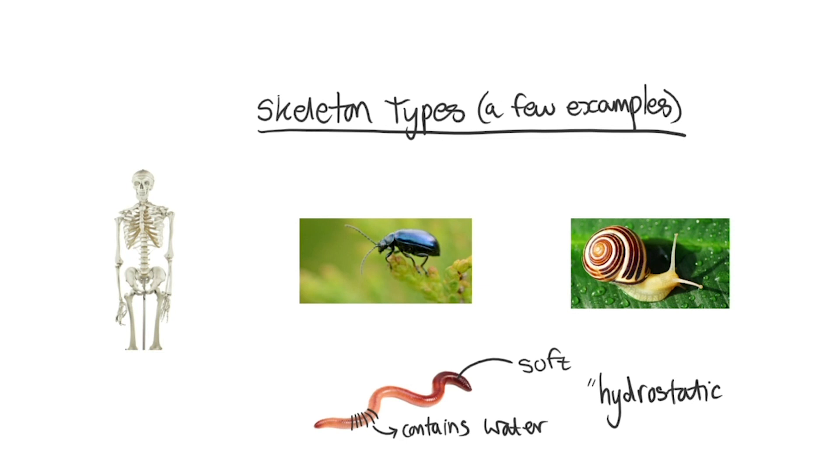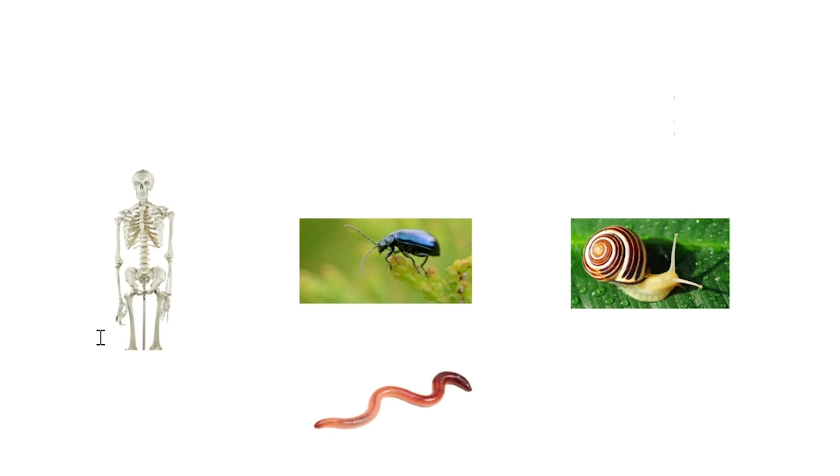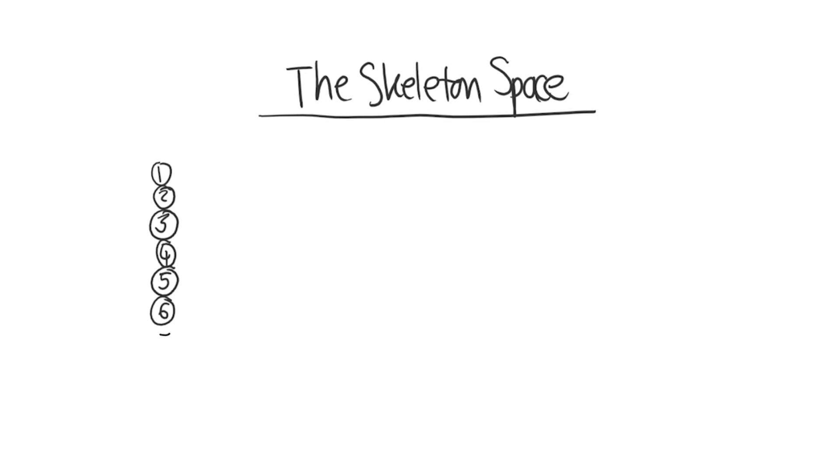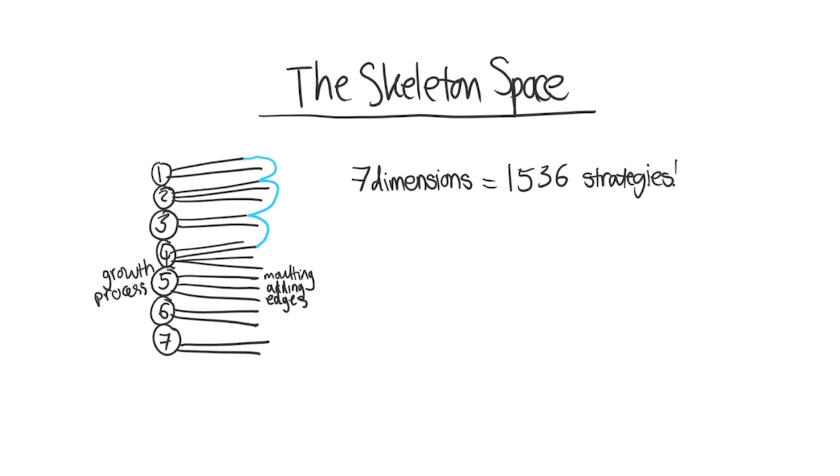This is called a hydrostatic skeleton. The many different types of skeleton have been summarised by researchers Thomas and Rife in the skeleton space. There are seven key categories of skeleton element in the skeleton space such as its growth process and each of these contain two to four options such as adding units, growing at the edges or molting. This makes the skeleton space seven-dimensional with 1,536 possible combinations of options.